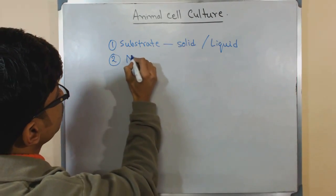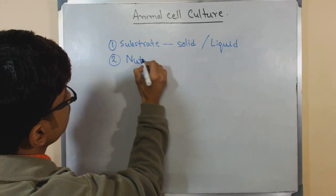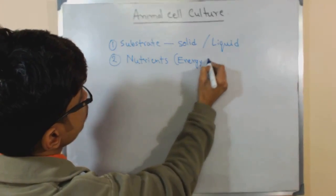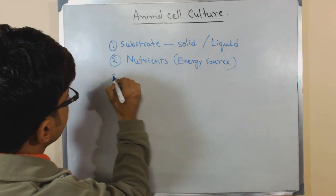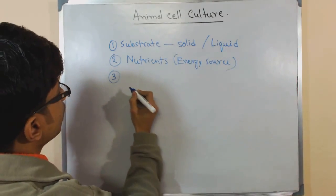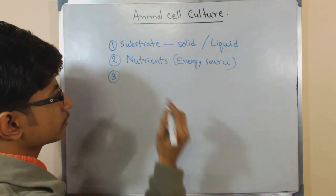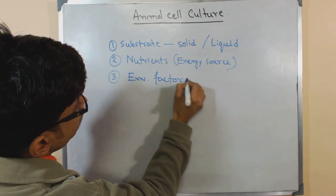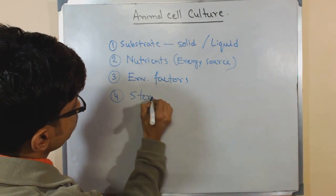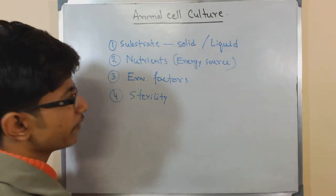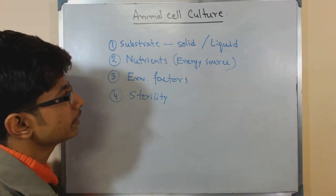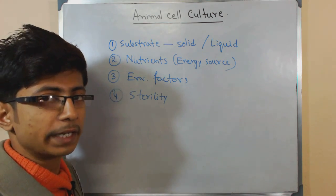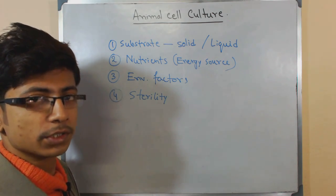Second thing we require is an energy source - that is nutrients, which we can call energy source. Third thing we require are environmental factors. And fourth thing we require is sterility, because sterility is very important. Without sterility no cell can grow because contamination will be there and cells will die and every effort that we put will just go fade away.